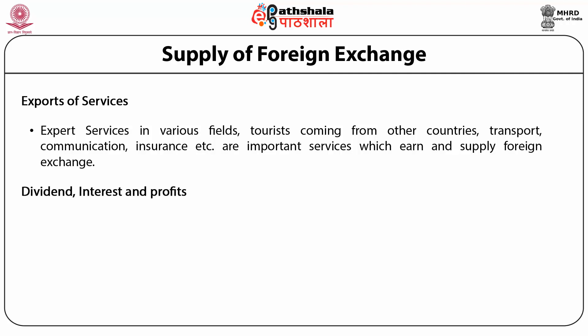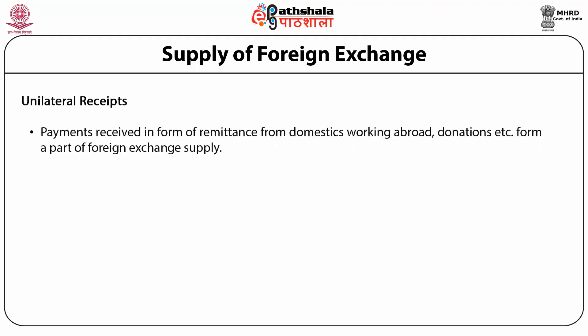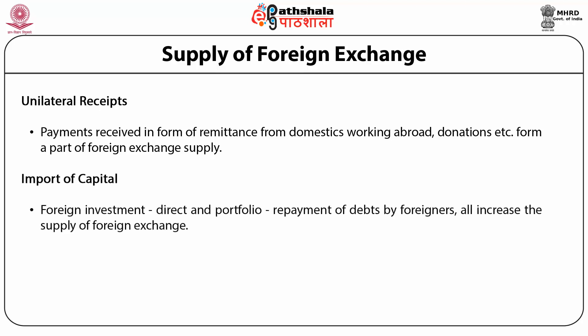Other sources are dividends, interest and profits. Indian firms have invested in various sectors in foreign countries, resulting in inflow of foreign exchange on account of dividends and profits. Indian institutions have also lent money abroad, which results in receipt of interest. Unilateral receipts: payments received in the form of remittances from domestic citizens working abroad, donations, etc., form part of foreign exchange supply as well. Other sources include import of capital such as foreign investment — direct and portfolio — and repayment of debts by foreigners, all of which increase the supply of foreign exchange.